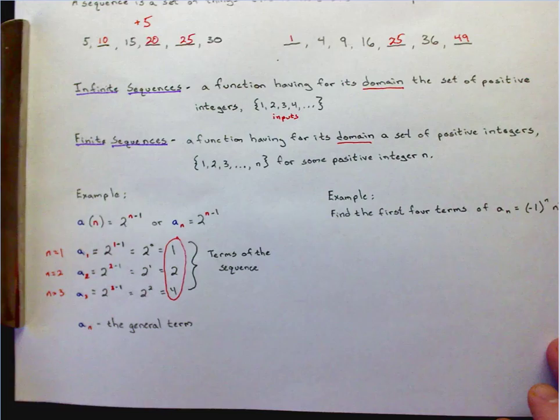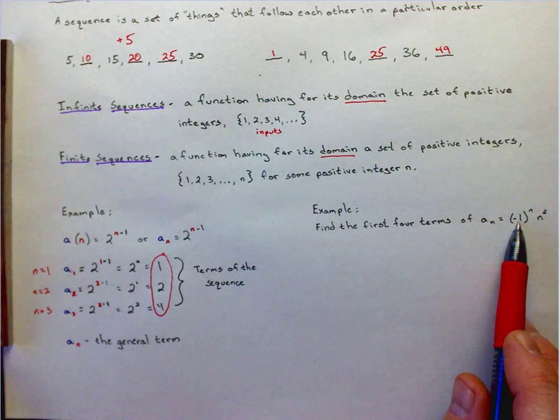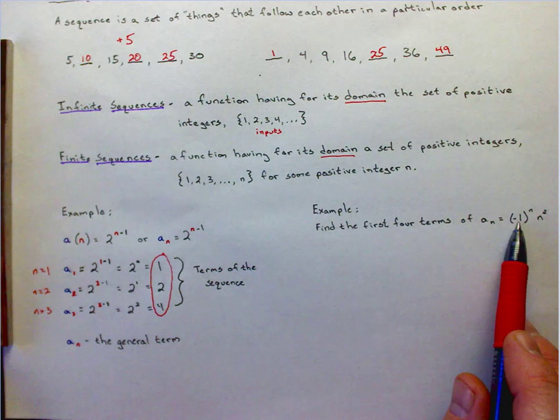So I have a problem for you right here. Find the first four terms of a sub n equals negative 1 to the nth power times n squared. Pause the video, and let's see if we end up with the same answer after you work it.